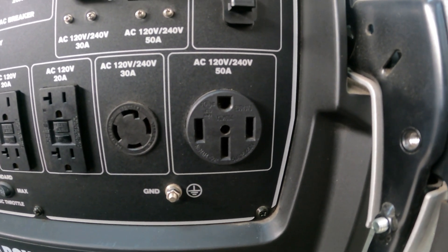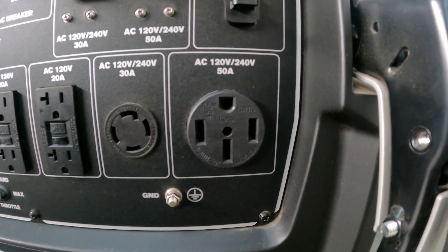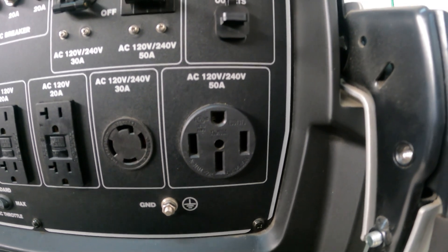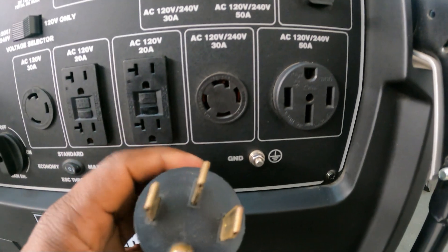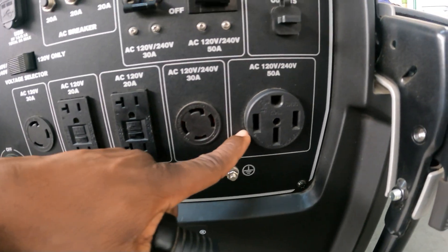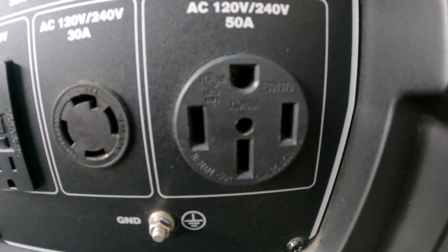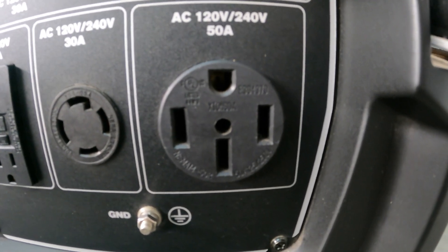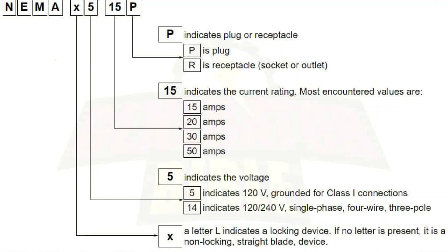Last, we have the big 50 amp receptacle for home backup — 120 volt/240 volt, 50 amp. You can pull a maximum of 12,000 watts from this receptacle. The plug would go right into this receptacle and give you that full 12,000 watts for home backup or 50 amp RVs.